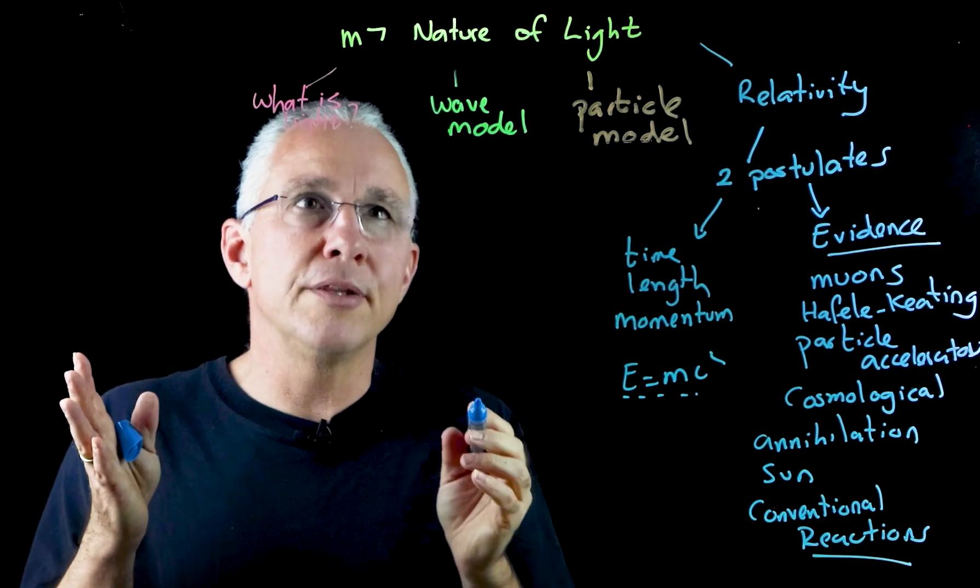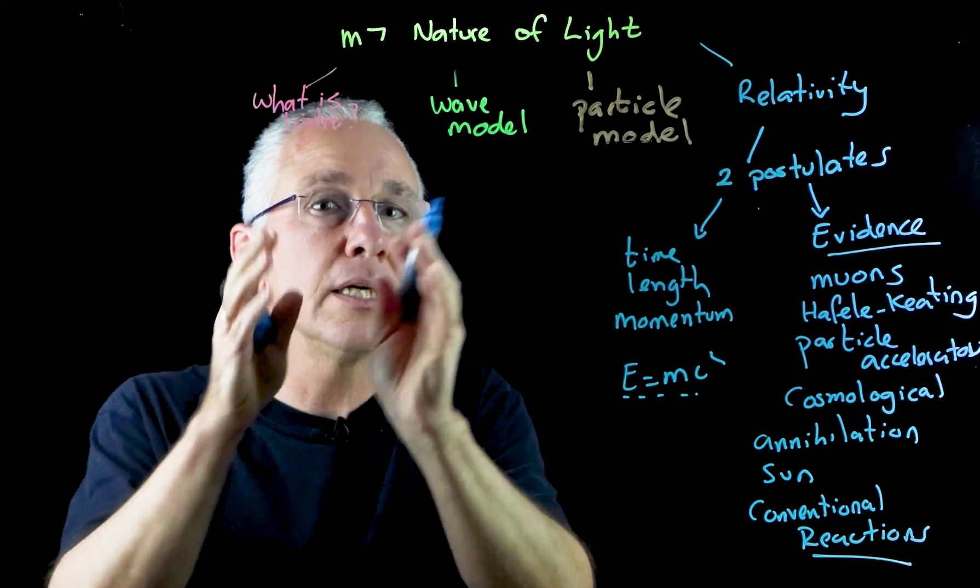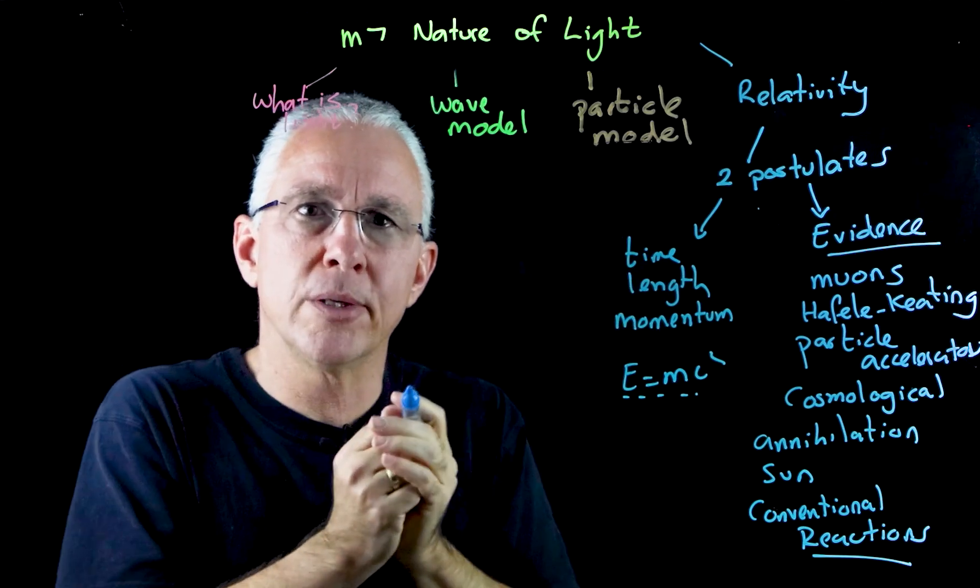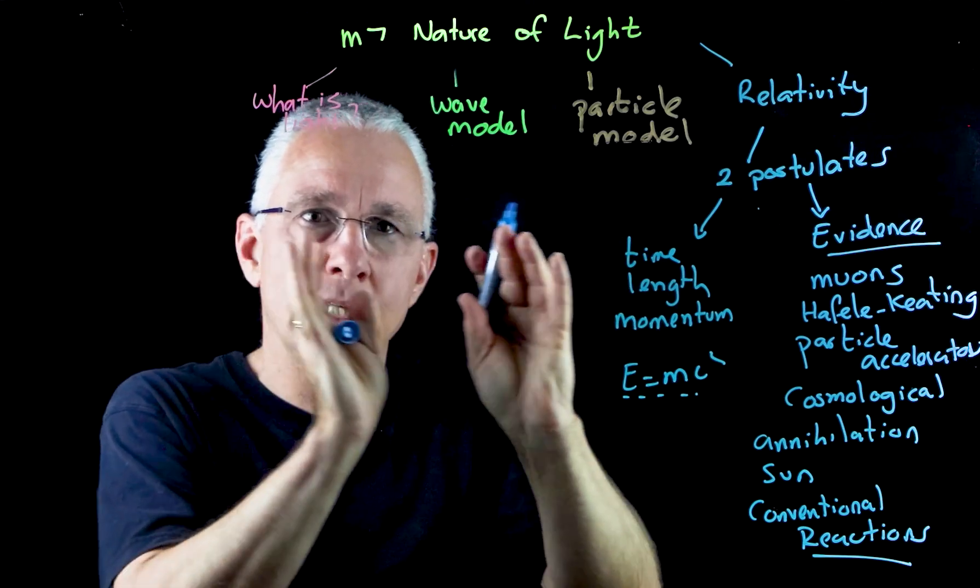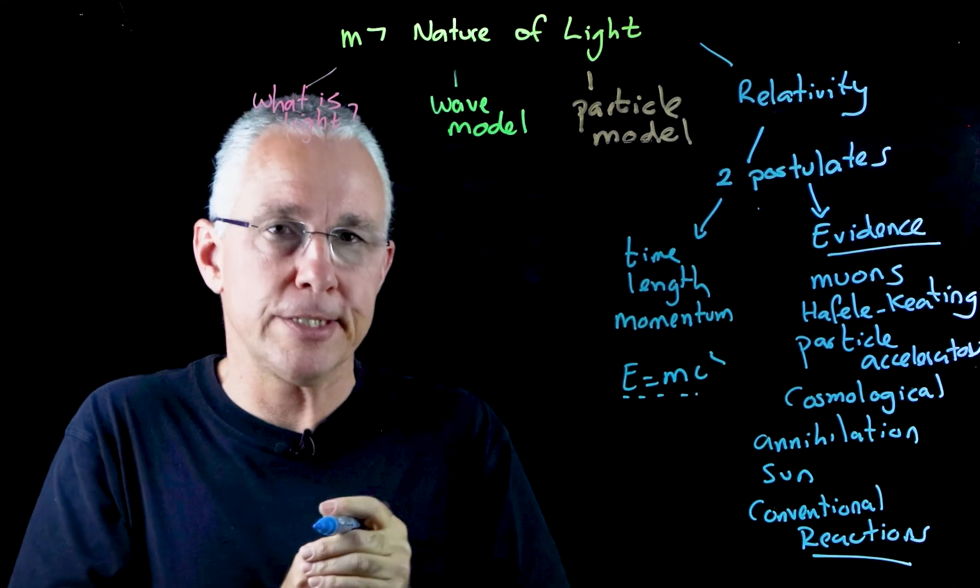So that is the nature of light. We start off with what is it? Give me the evidence for the wave model. What about the evidence for the particle model? And now that we understand what light is, what are the consequences of the speed of light being constant? Well I hope that it helps you understand this particular inquiry question and as it fits in the other inquiry questions within this particular module.